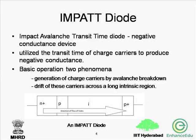Here we start with the IMPATT diodes. The name IMPATT comes from the impact avalanche transit time diodes. These are negative conductance devices. They utilize the transit time of charge carriers to produce negative conductance.